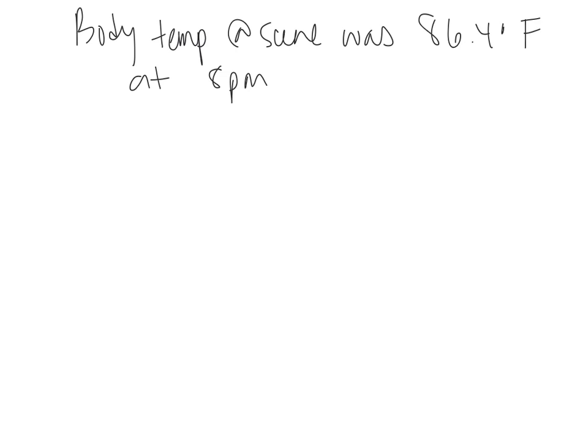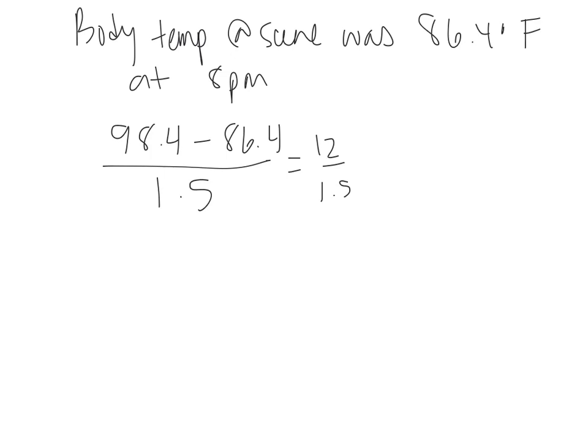Example one: body temperature at the scene was 86.4°F at 8 PM. We do our equation: 98.4 minus 86.4 divided by 1.5. So 98.4 minus 86.4 equals 12, divided by 1.5 gives us eight hours since that person died.